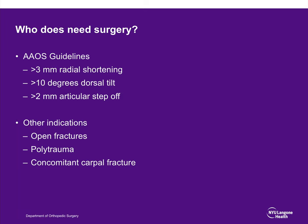The AAOS party line is: greater than 3 millimeters of radial shortening, greater than 10 degrees of dorsal tilt, and more than 2 millimeters of articular step-off are indications for surgery in young people. Other indications include open fractures, polytrauma, and concomitant carpal fractures.